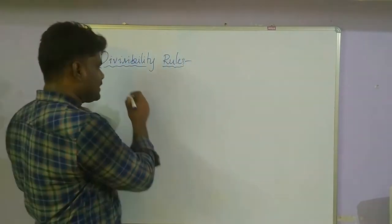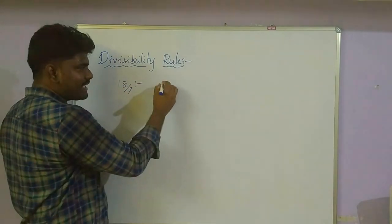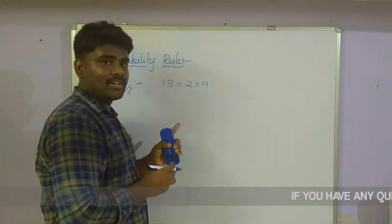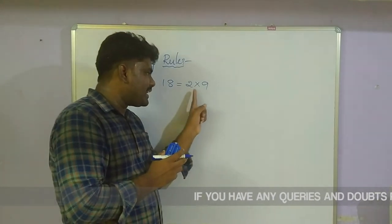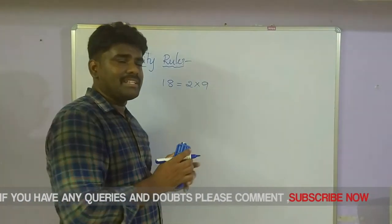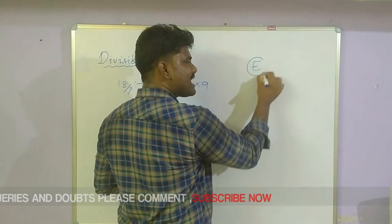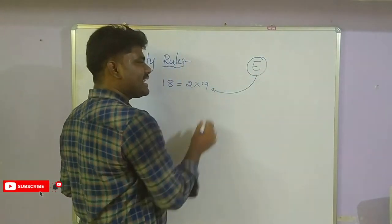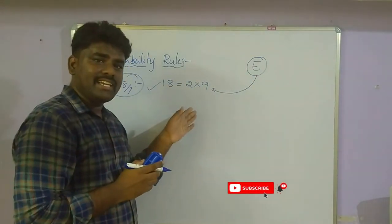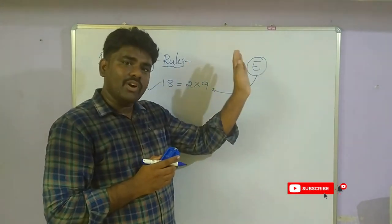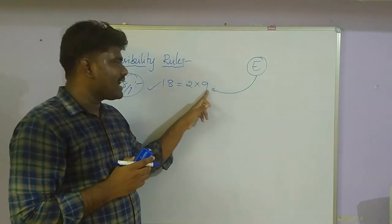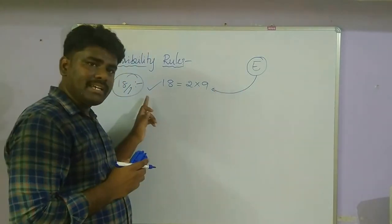Now we are entering into the 18 divisibility rule. 18 can be written as a product of two co-prime numbers: 2 × 9. That means the number must be divisible by both 2 and 9. Since divisibility by 2 means the number must be even, first check if the given number is even. If it is odd, it is not divisible by 18. If it is even, check if it is divisible by 9. If yes, the entire number is divisible by 18.